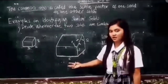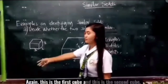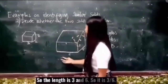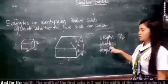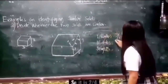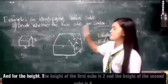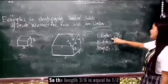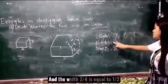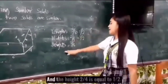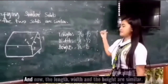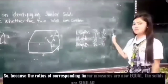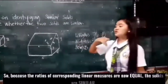Example number 2: again, the first cube and the second cube. We will find the ratio of the length, width, and height. The length is 3 and 6, so 3/6. The width of the first cube is 2 and the second cube is 4, so 2/4. The height of the first cube is 2 and the second cube is 4, so 2/4. Simplifying: length 3/6 = 1/2, width 2/4 = 1/2, height 2/4 = 1/2. The length, width, and height all give the same ratio. Because the ratios of corresponding linear measures are now equal, the solids are similar.